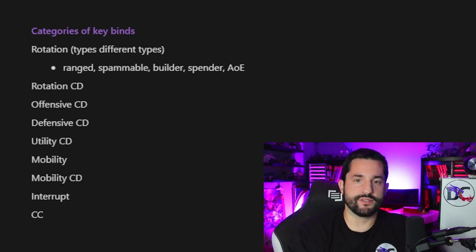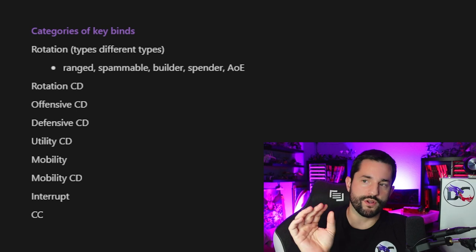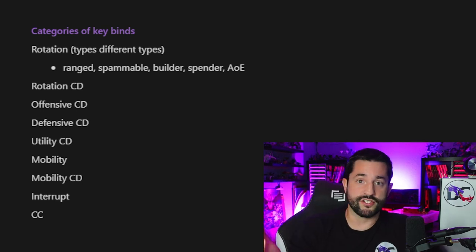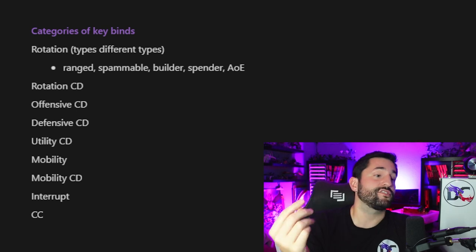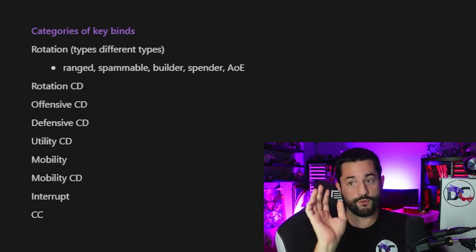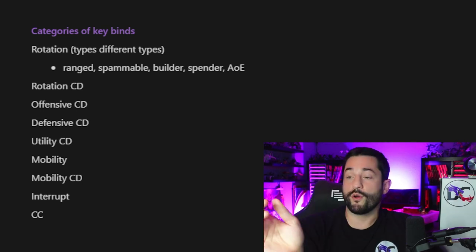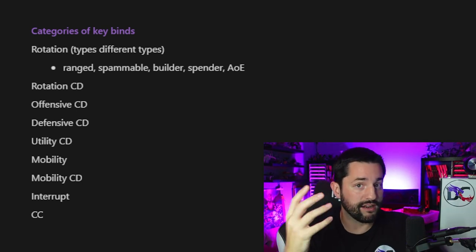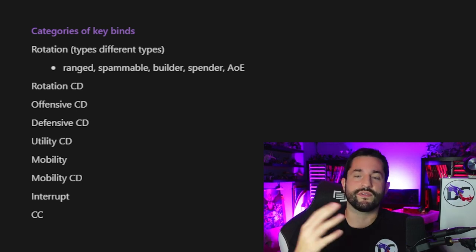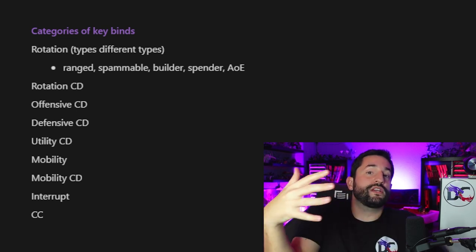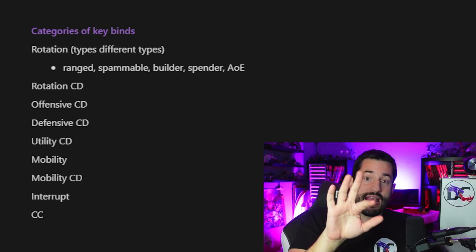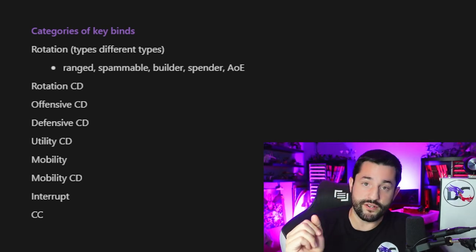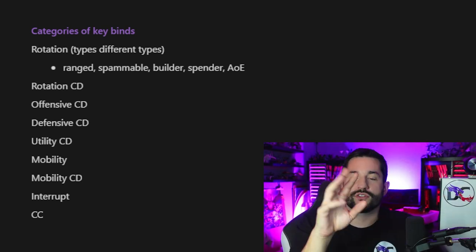Here are the different categories of key binds. First type is rotation — the buttons in your rotation are going to differ a little. Some might be ranged, like Paladins have Avenger's Shield as part of their rotation. My ranged throws are in a certain spot — mine is on Q. There's also a spammable button, the one you'll probably press most often, on R. Builder and spender abilities are different types — I like to put those on opposite sides of my hand, so if R is for builders and W is for spenders, or one and two are builders and four and five are spenders.